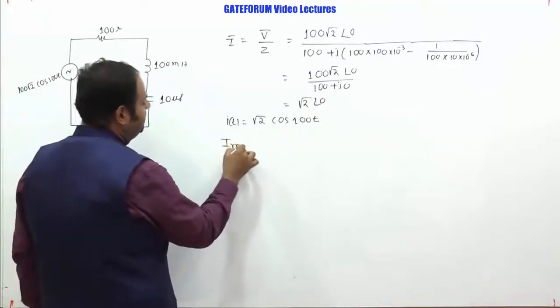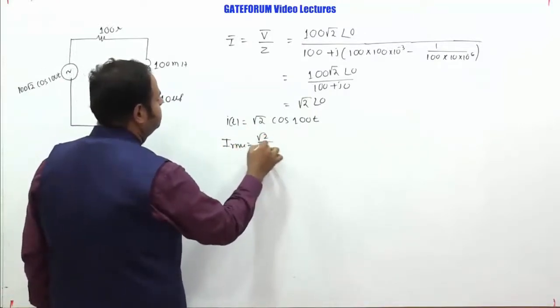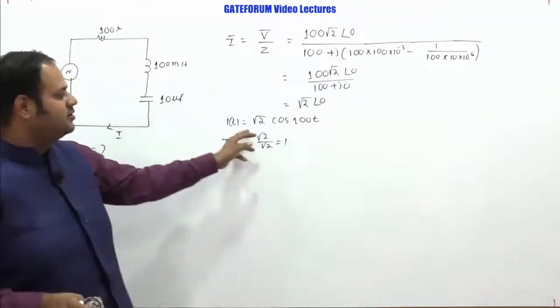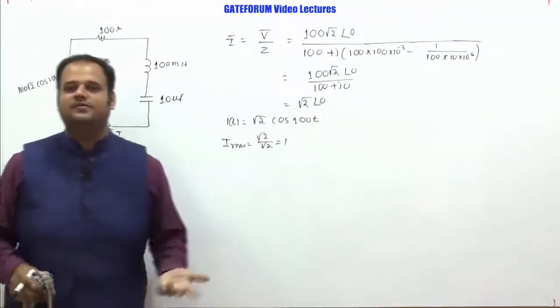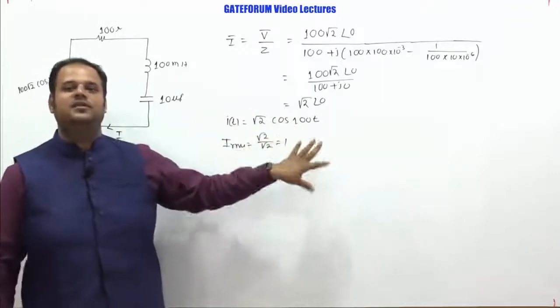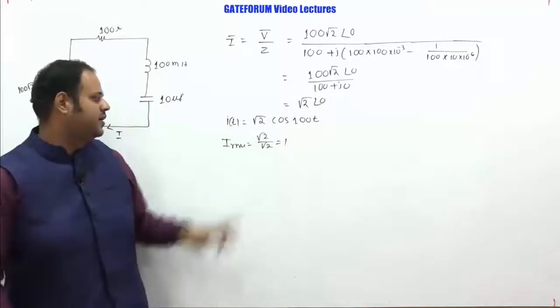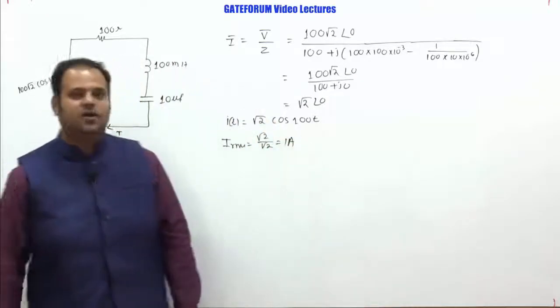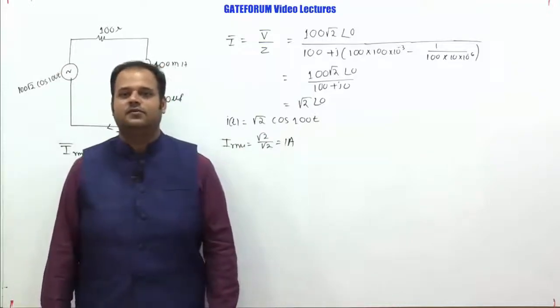So if this is the current expression i(t), if I ask you what is the RMS value of this, so this would be root 2 by root 2, that is 1. Because if I have I cos omega t, its corresponding RMS value will be I by root 2. So if this is the current i(t), if I ask you what is the RMS value, so this by root 2. So root 2 by root 2 is 1 ampere. So if you see the answer, this is given as 1 ampere. So 1 ampere is the right answer for this question.